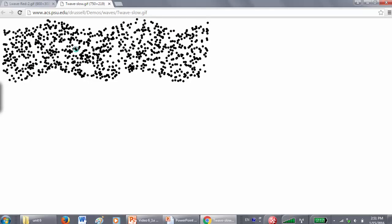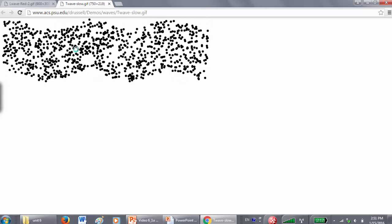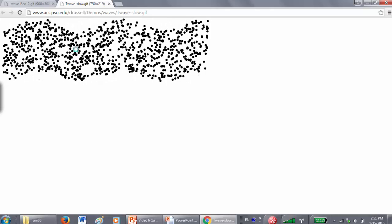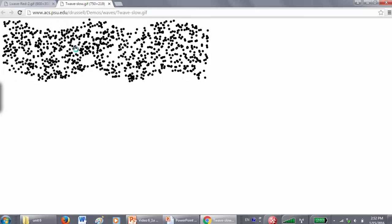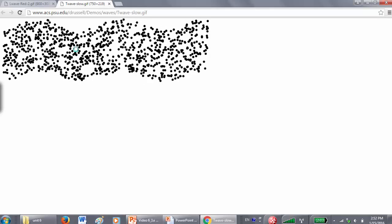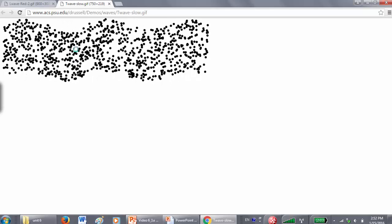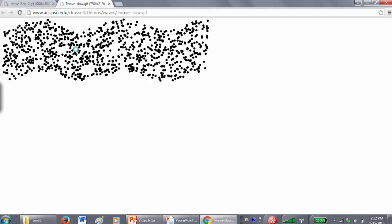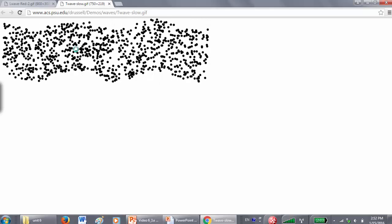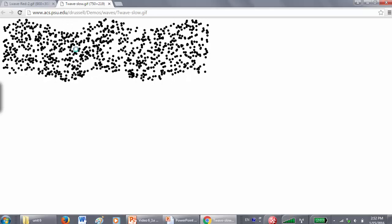Now if we look at this animation here, again we have a wave front moving from left to right. If we look at this particle right here, it's not moving left to right, it's only oscillating up and down. This particular type of wave is called a transverse wave. Its particles are moving perpendicular to the direction of motion. So while the particle is moving up and down, the wave is moving left to right.